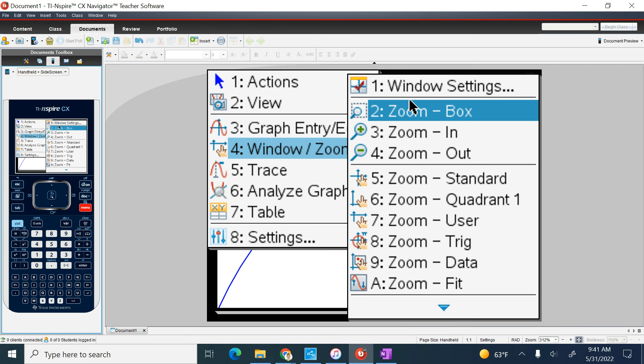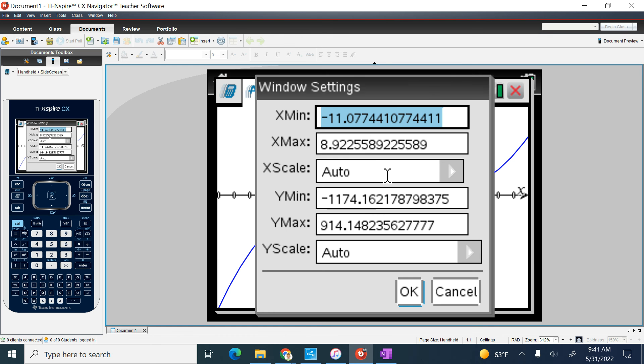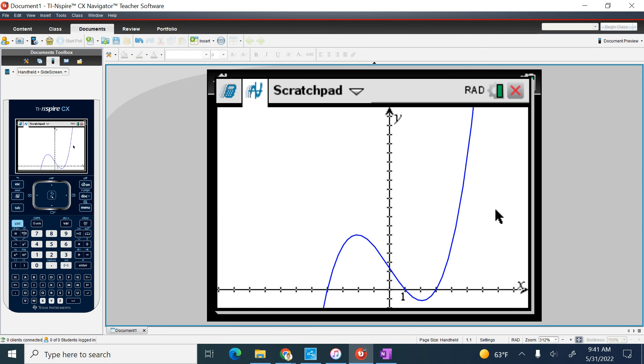So I'm going to go to menu, window zoom, window settings. I'm going to adjust my y min to negative 10 and my y max to like 100 and see if that looks a little bit better. That's much better.